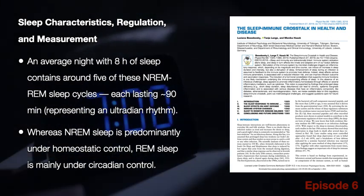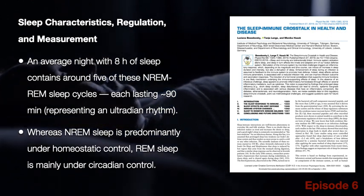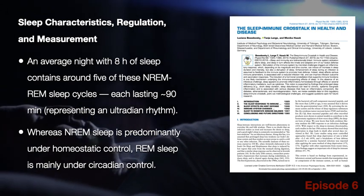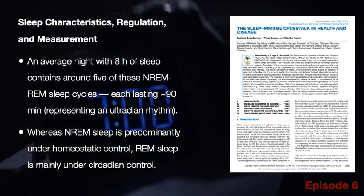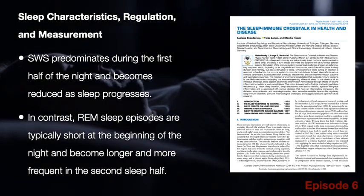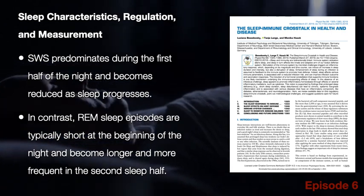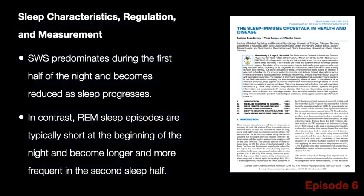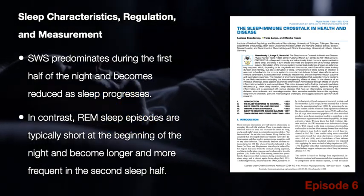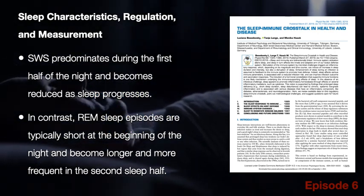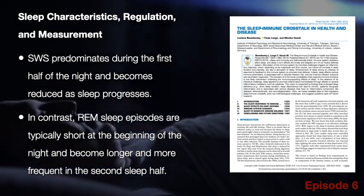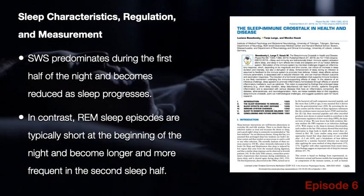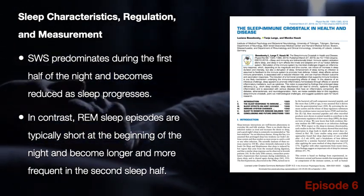Whereas NREM sleep is predominantly under homeostatic control, REM sleep is mainly under circadian control. Slow wave sleep (SWS) predominates during the first half of the night and becomes reduced as sleep progresses. In contrast, REM sleep episodes are typically short at the beginning of the night and become longer and more frequent in the second sleep half.